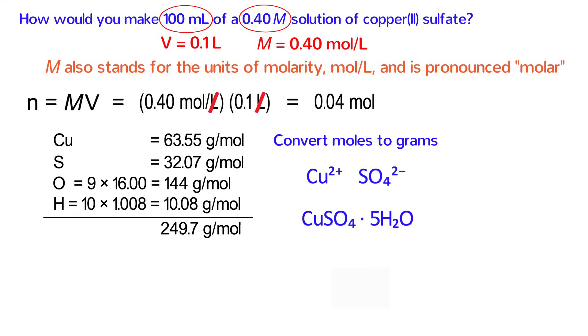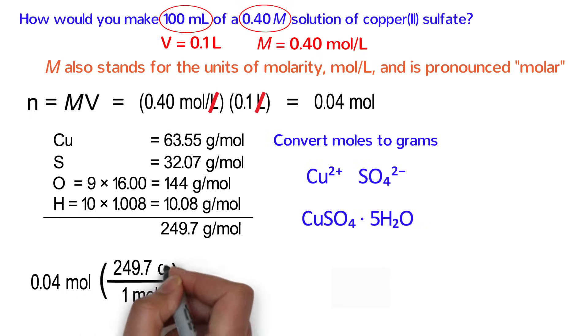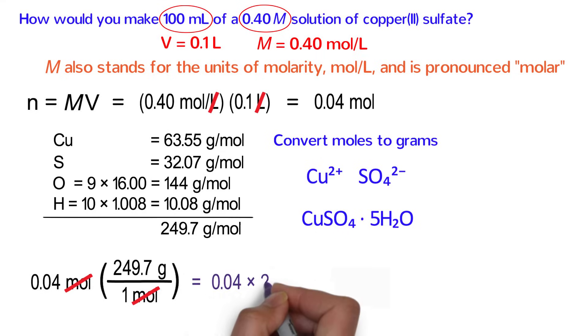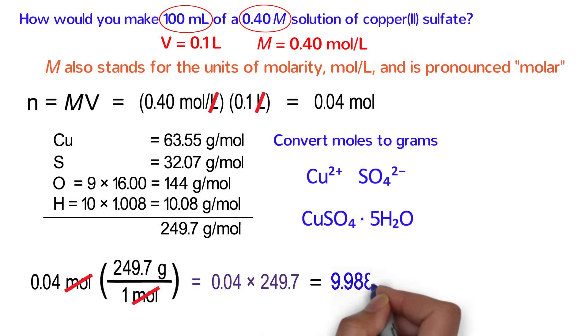This is our conversion factor between moles and grams. In order to calculate the mass of CuSO4 sulfate needed, we multiply 0.04 moles by a conversion factor fraction. Because we are starting with moles, one mole goes on the bottom. Because we are solving for grams, 249.7 grams goes on the top. Moles on the top and bottom cancel out. Because the one is on the bottom, multiply 0.04 times 249.7 to get 9.988 grams.